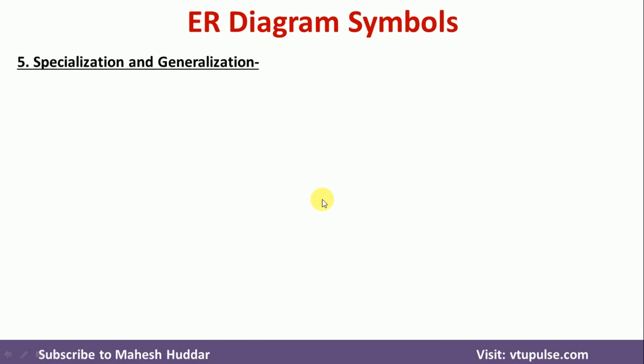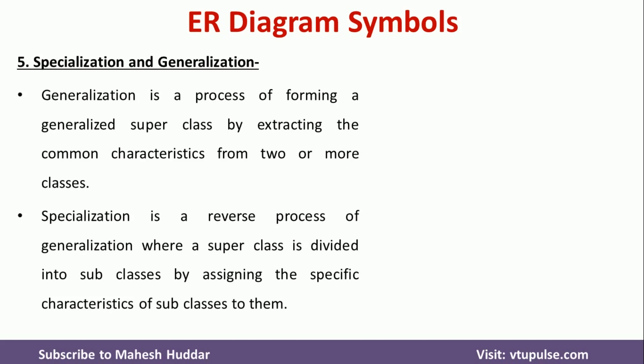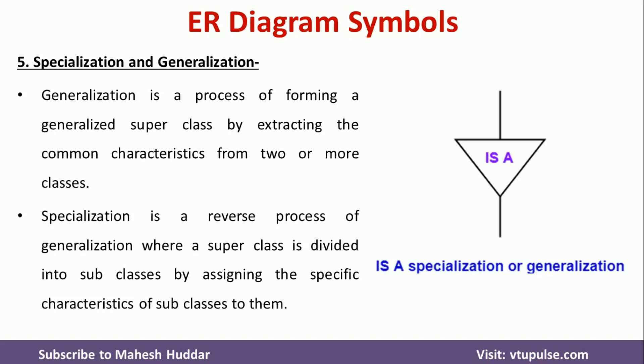Coming to the next one — Specialization and Generalization. Generalization is a process of forming a generalized superclass by extracting the common characteristics from two or more classes. Specialization is the reverse process, where we form multiple classes from the superclass. The specialization or generalization is represented in ER Diagram using an 'is-a' relationship, shown with a triangle symbol.